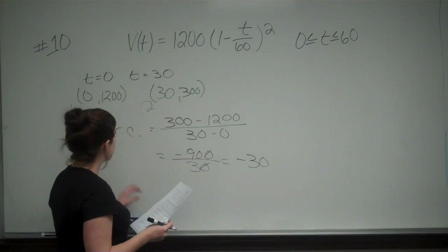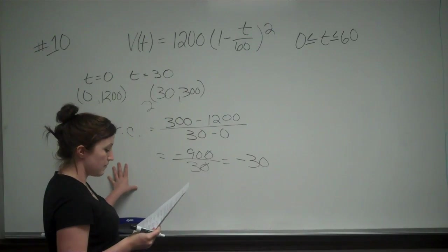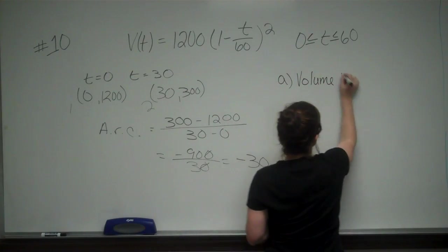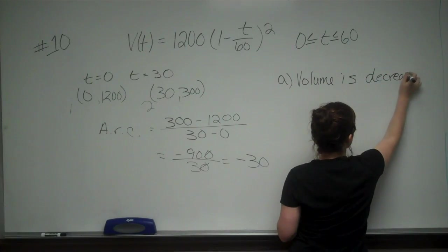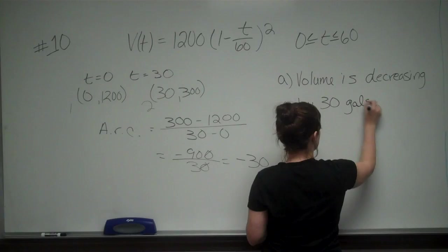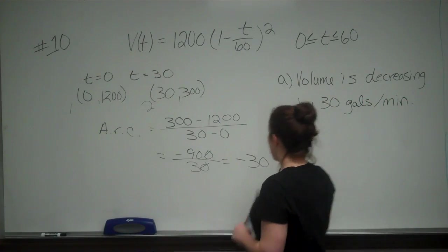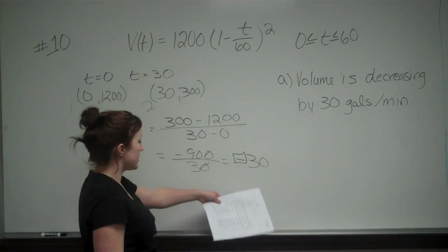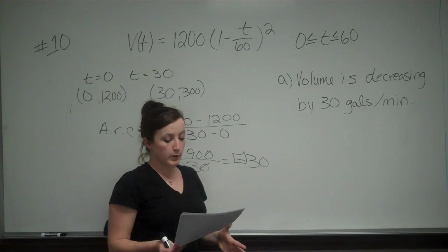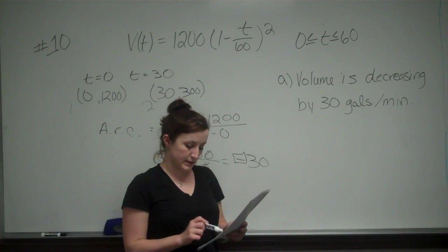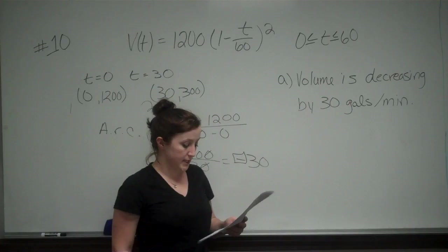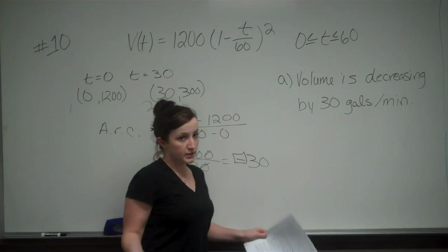So that is the rate of volume change from T=0 to T=30. For part A, the volume is decreasing by 30 gallons per minute. I know it's decreasing because of the negative sign, and the units are gallons because that's what we were told. Looking at the answer choices, we can already eliminate B, C, and E because they don't have part A correct. So we're only looking at A or D, but we need to solve part B.